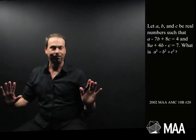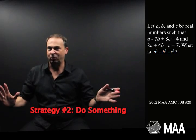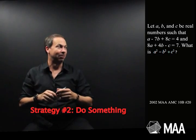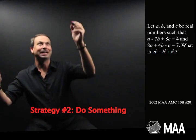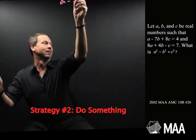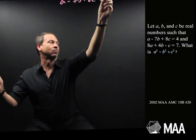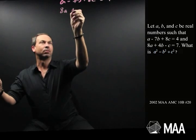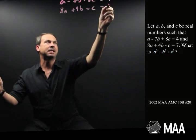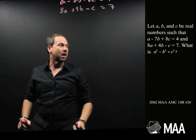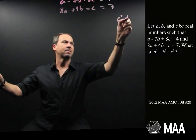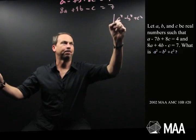Okay, all right, well, I'm just going to do something. Strategy number two, just do something. Well, my first something is to write down the two equations. I need them. a minus 7b plus 8c equals 4 and 8a plus 4b minus c equals 7. And I want a squared minus b squared plus c squared.